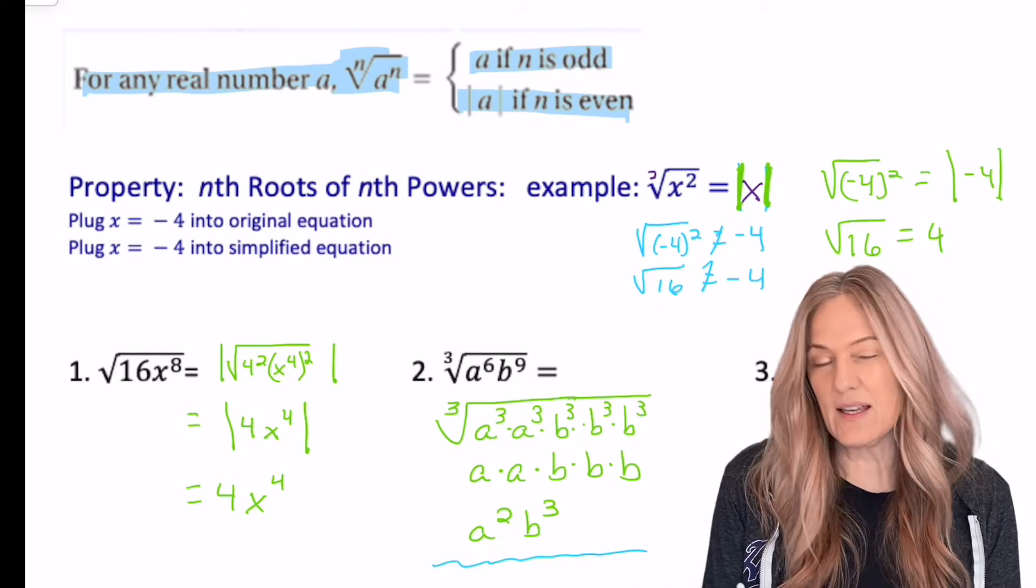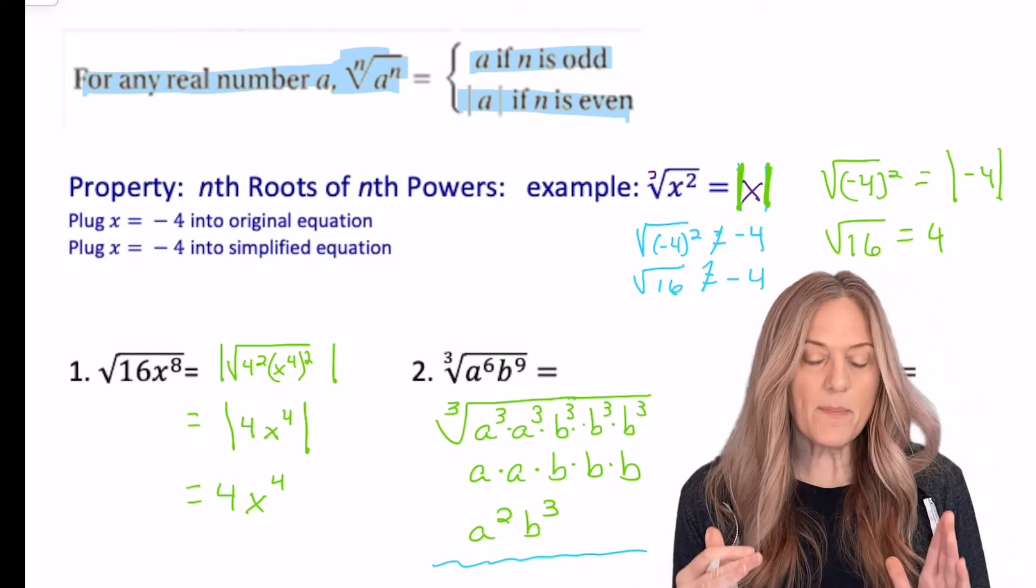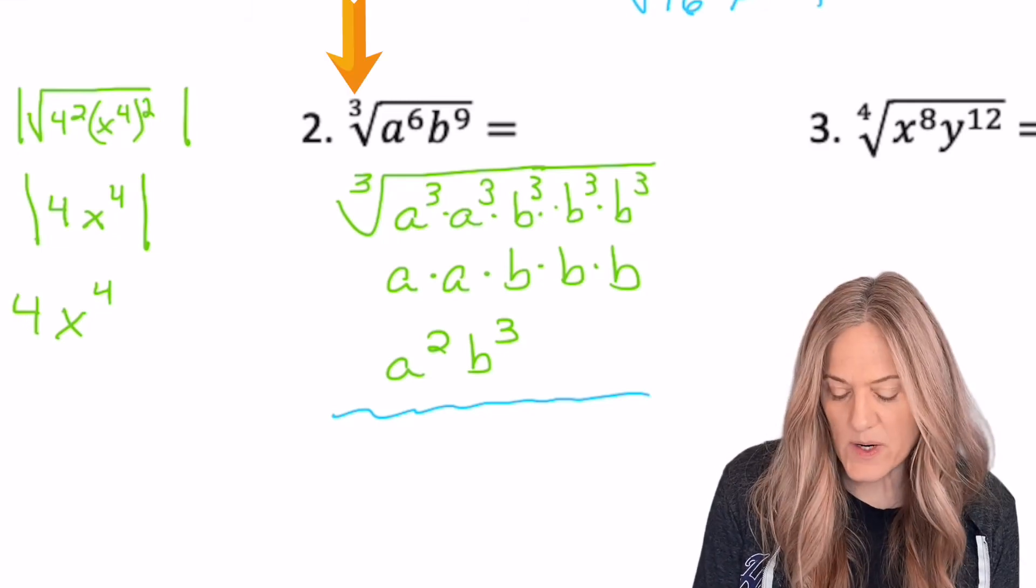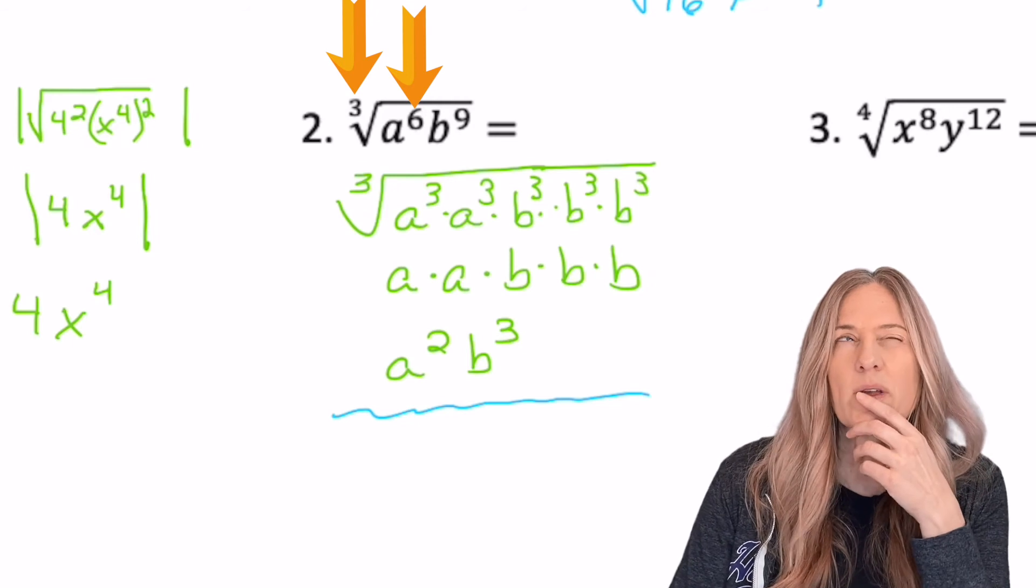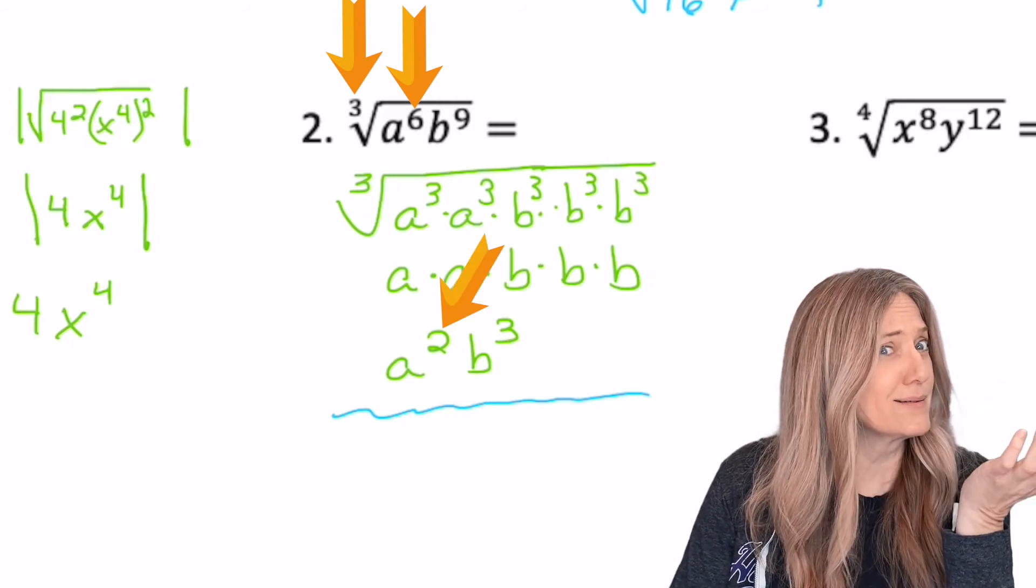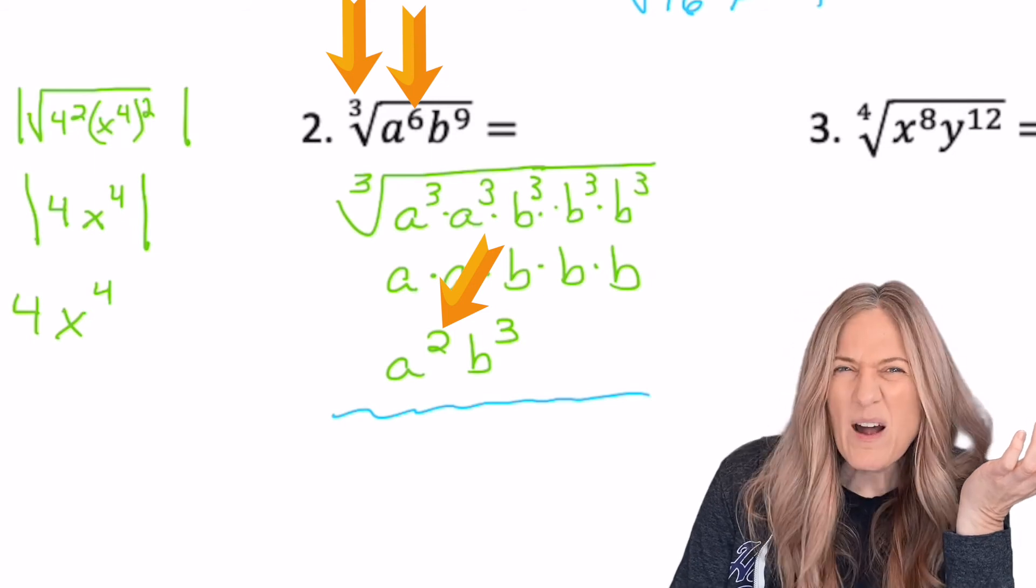Now I'm going to go ahead and get a little ahead of us here. Think about this. I ended up with a squared. I had an index of three and a power of six, and I ended up with two. Well, six divided by three is two. Would that work?